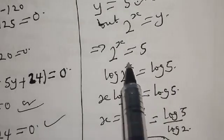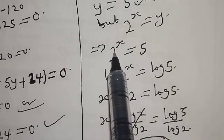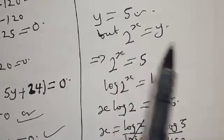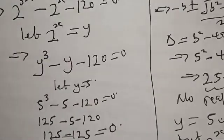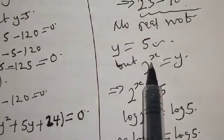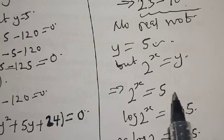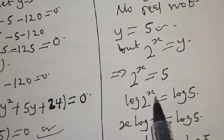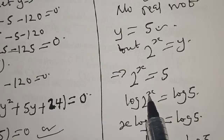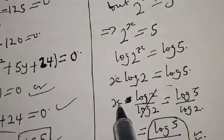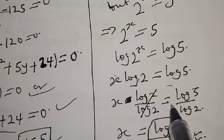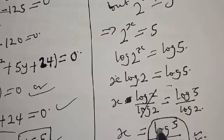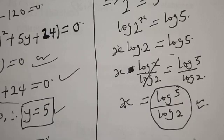Once again, we said 2 raised to power x is equal to 5. We take the log of both sides because we let y equal 2 raised to power x, so 2 raised to power x equals 5. Taking log of both sides: log of 2 raised to power x equals log 5. By the log law, x times log 2 equals log 5. Dividing both sides by log 2, x is equal to log 5 over log 2. That is our final answer. Thank you.